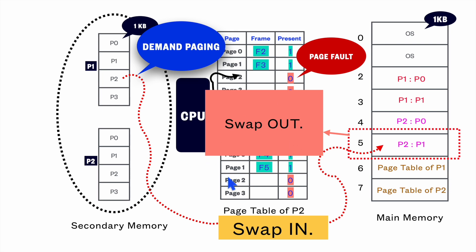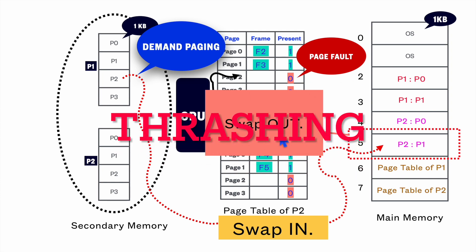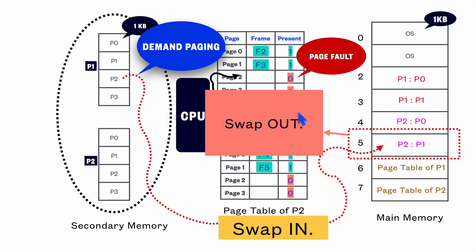In this scenario, a lot of time will be spent for swapping itself, which will decrease system performance very significantly — and this is called thrashing. Where CPU utilization is at maximum level, page faults are happening very frequently, and the process of swap out and swap in is happening for most of the time with a lot of time spent in this process. This state is called thrashing in operating system.